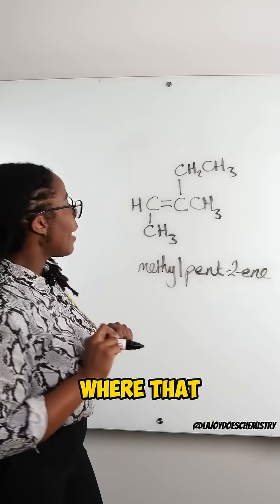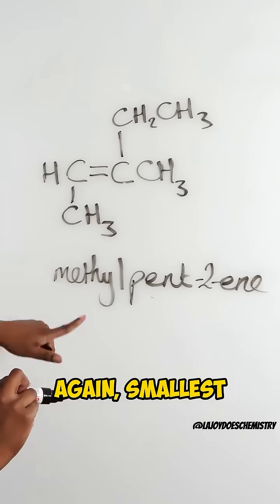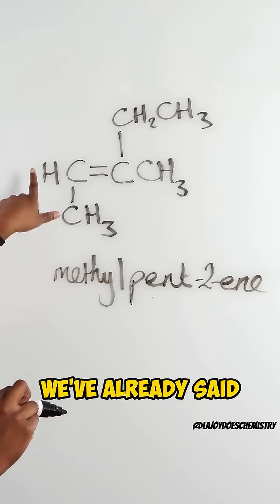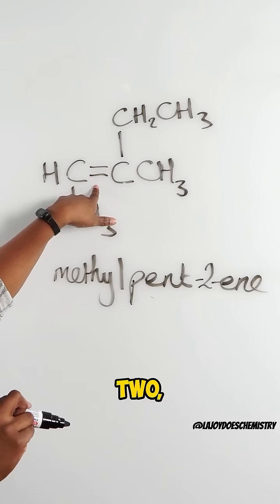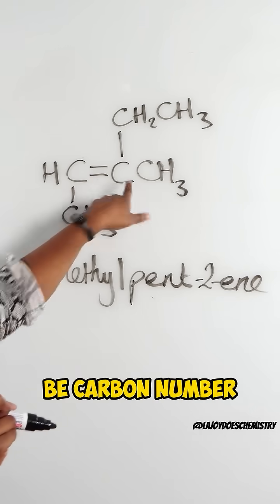And we'll say where that methyl is through numbering. Again smallest possible number. We've already said that this is carbon number two so this must be carbon number three.